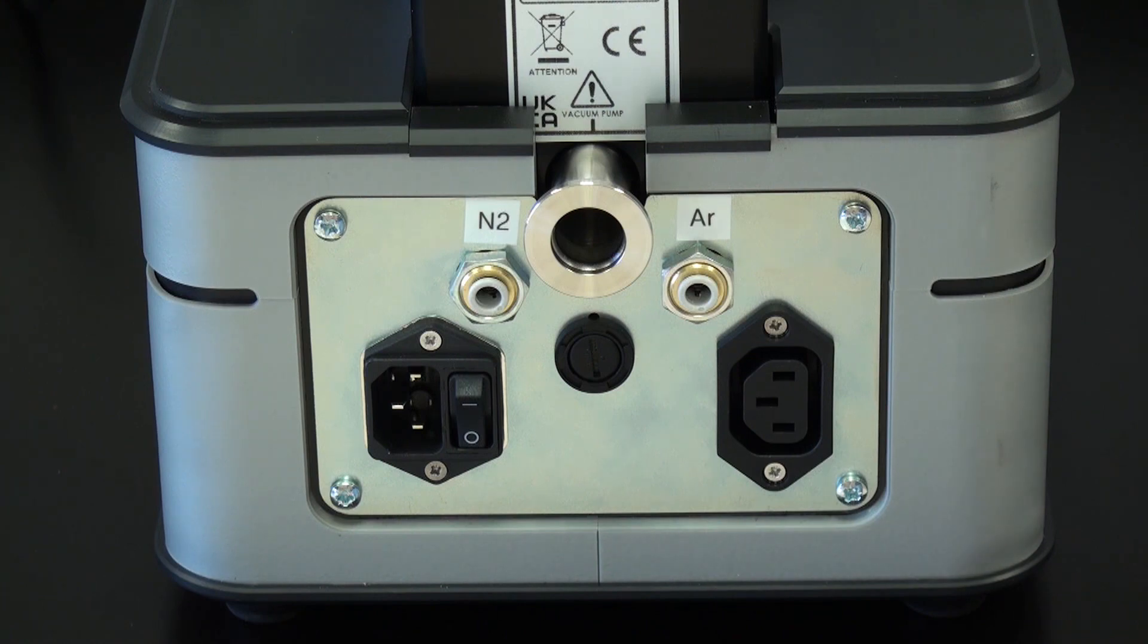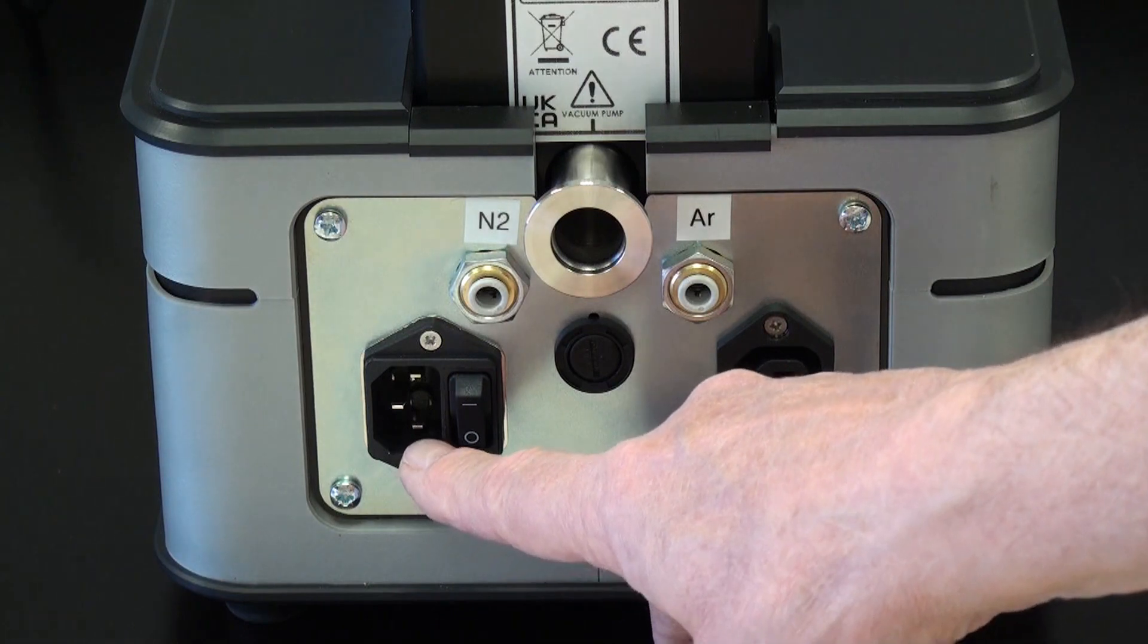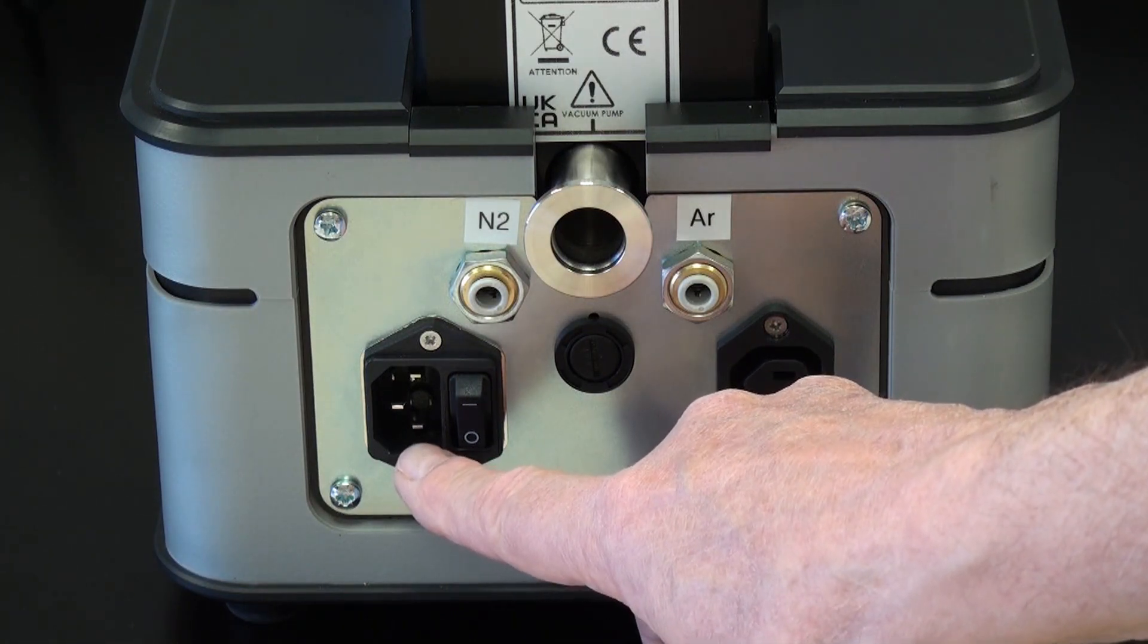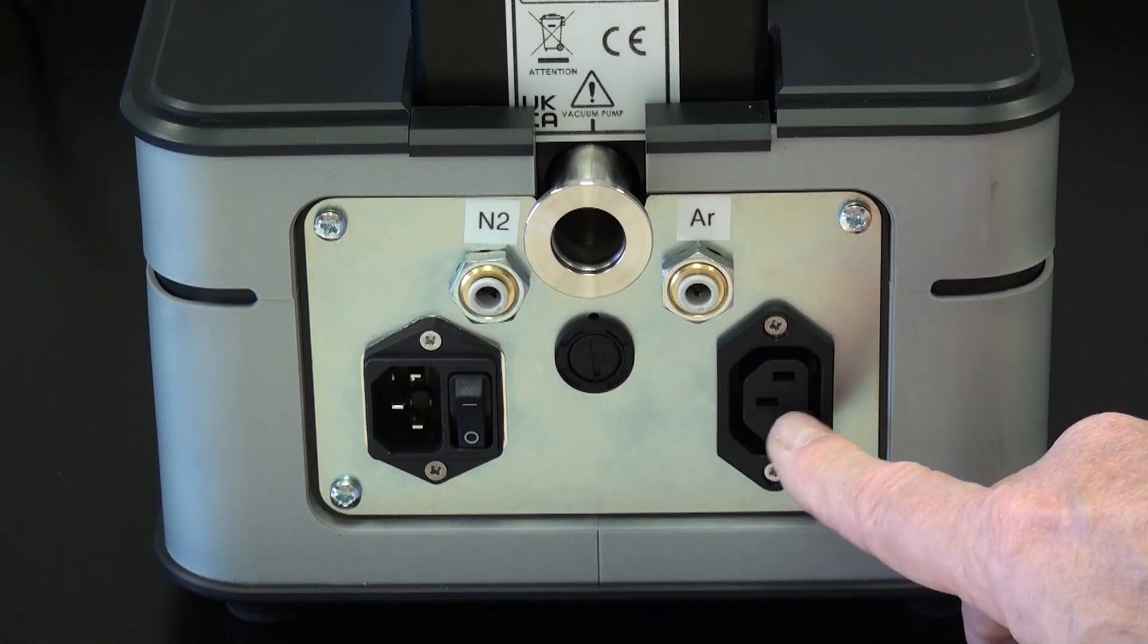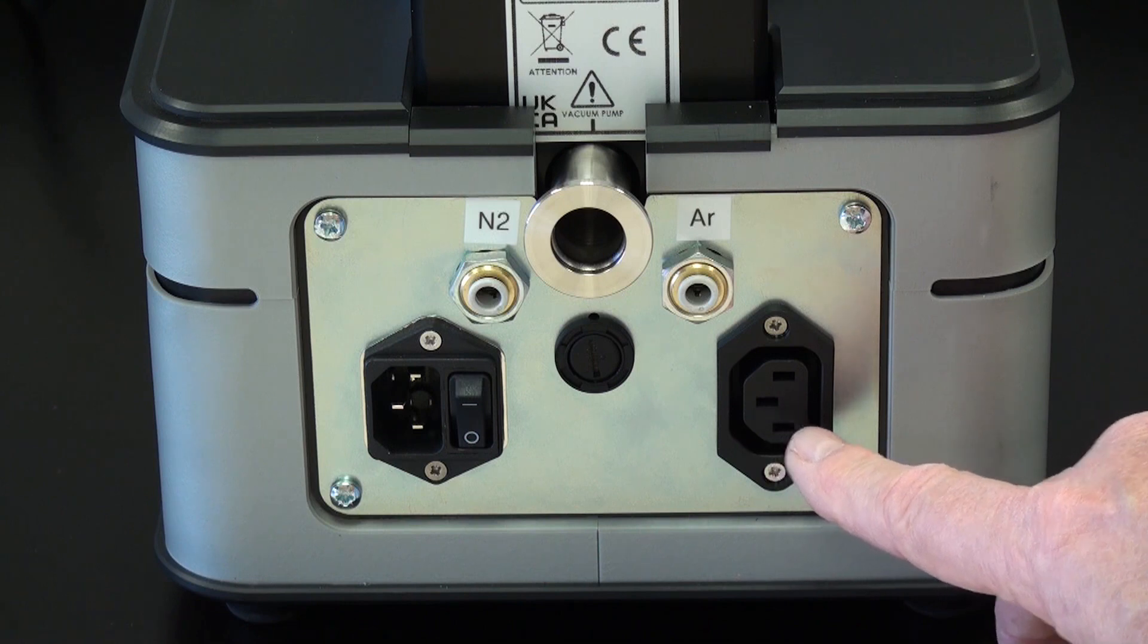You can also vent the system with argon gas if you wish, if this is more convenient where you only have one gas bottle in the room next to the instrument. You get the fittings in the accessory kit to do all that. Standard modular line cord for power, power switch, fuse, and this is the interface for the rotary pump.